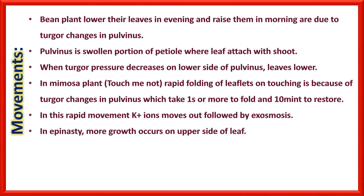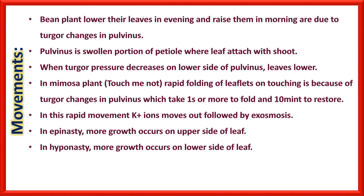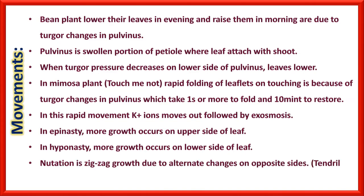In this rapid movement, potassium ions move out followed by exosmosis of water. In epinasty, more growth occurs on the upper side of the leaf. In hyponasty, more growth occurs on the lower side of the leaf. Nutation is zigzag growth due to alternate changes on opposite sides of the stem or shoot — for example, tendrils grow in a zigzag or spiral manner.